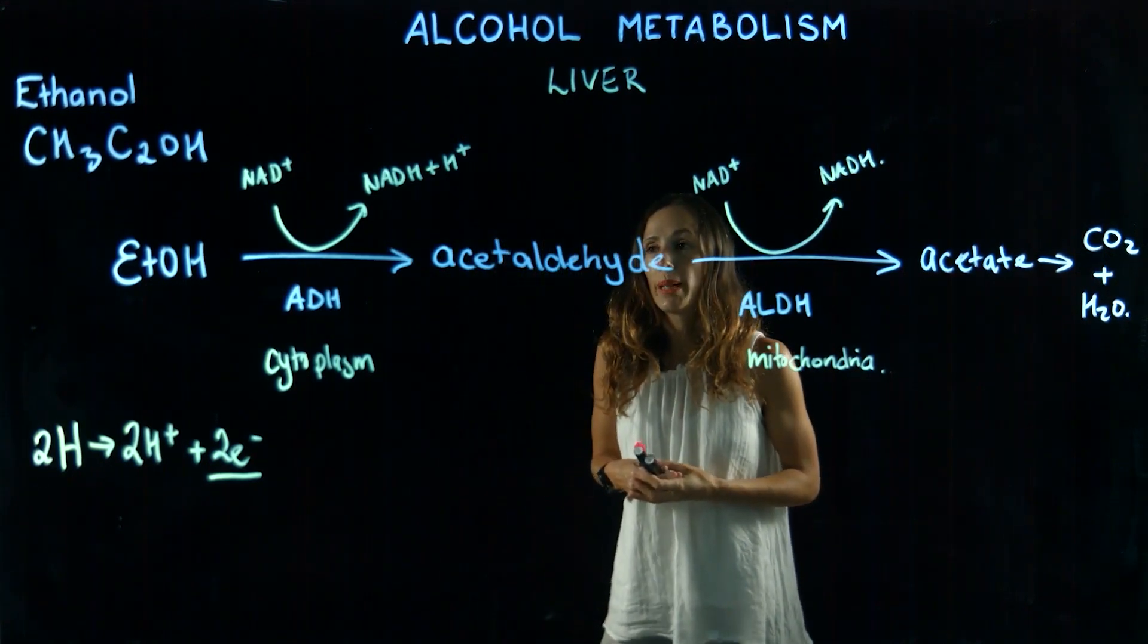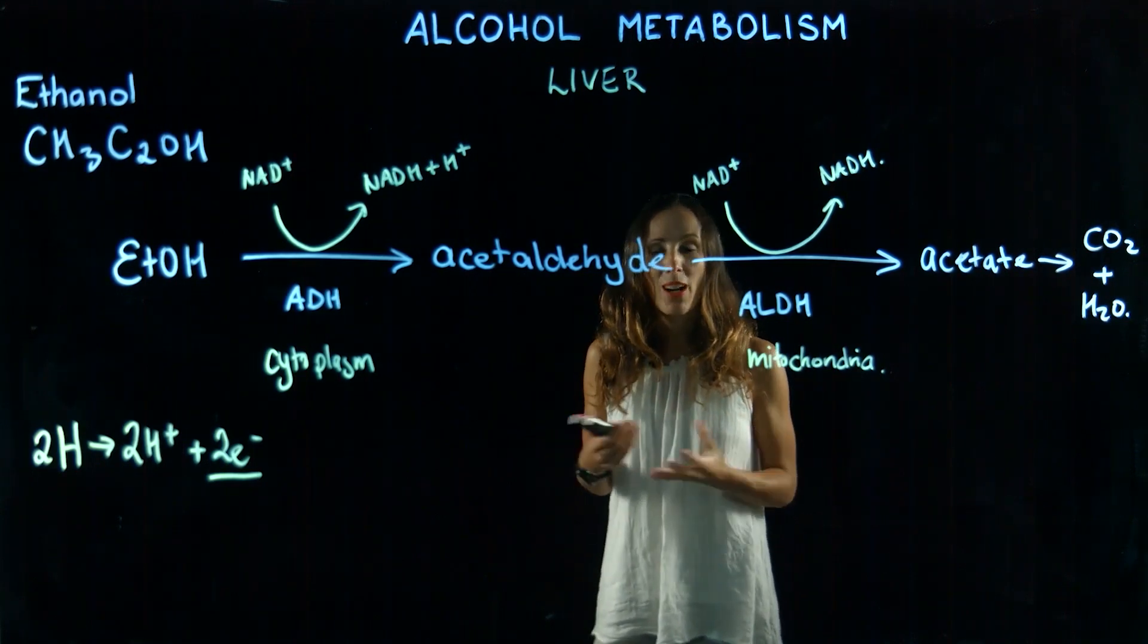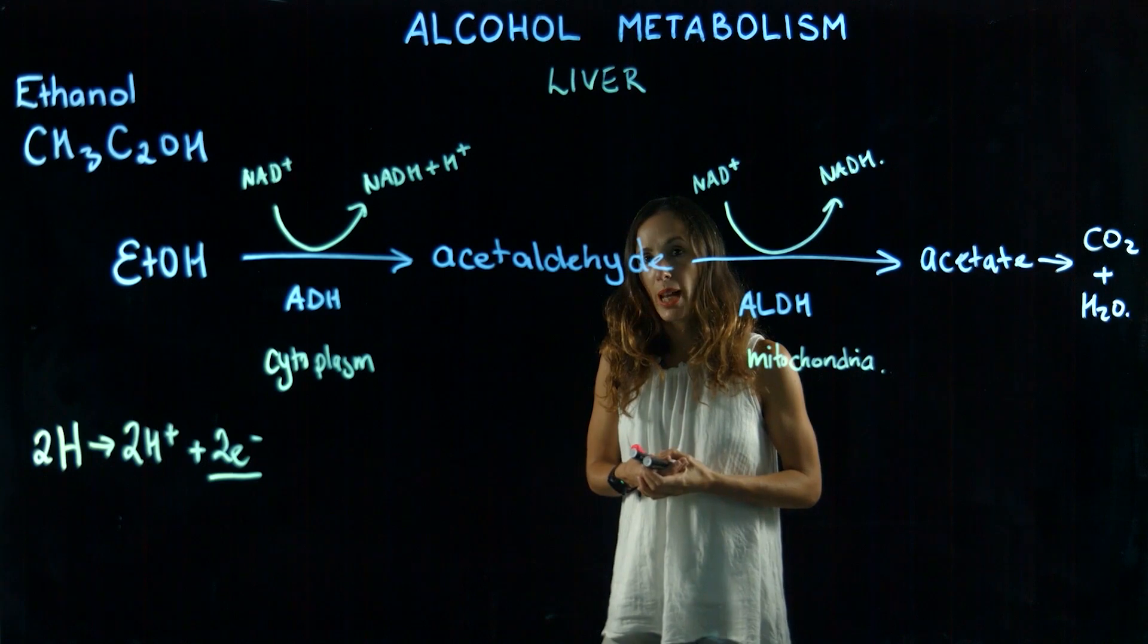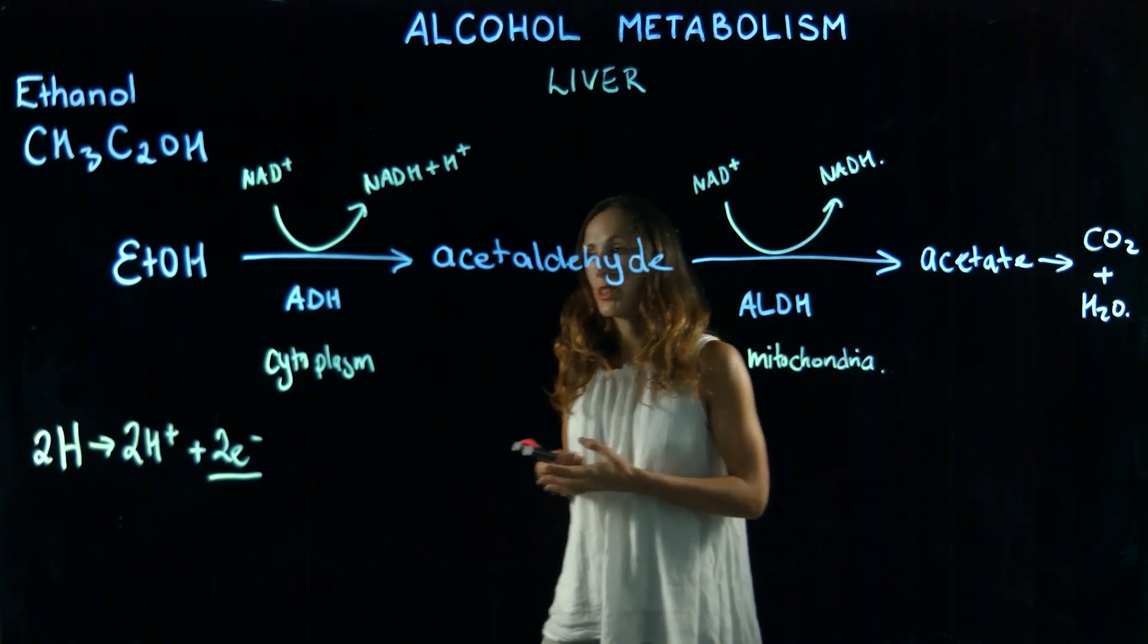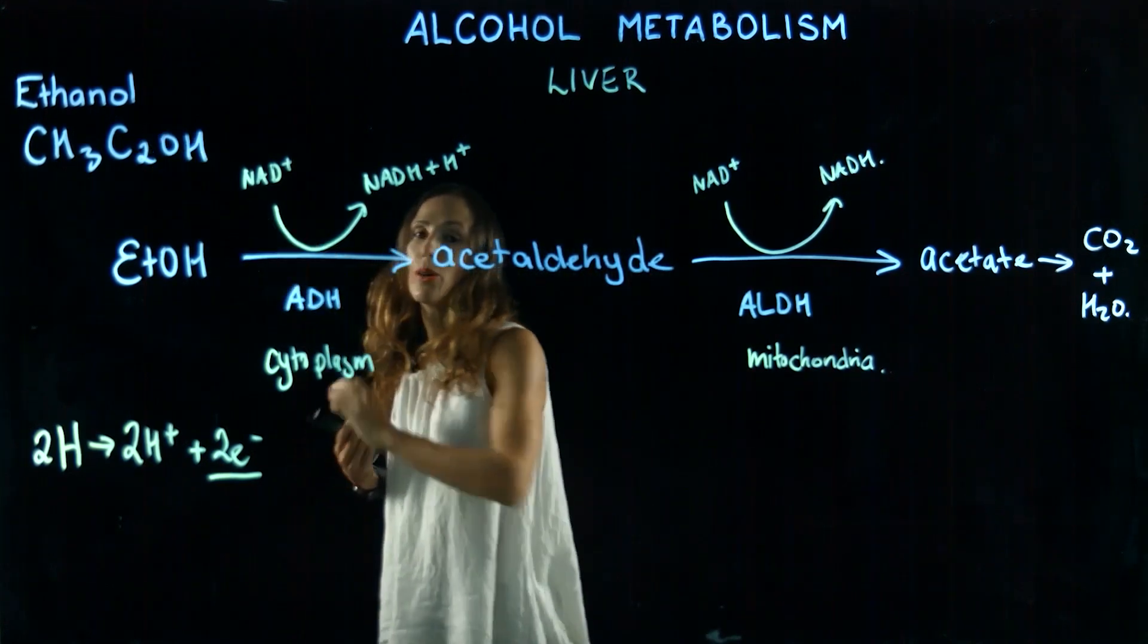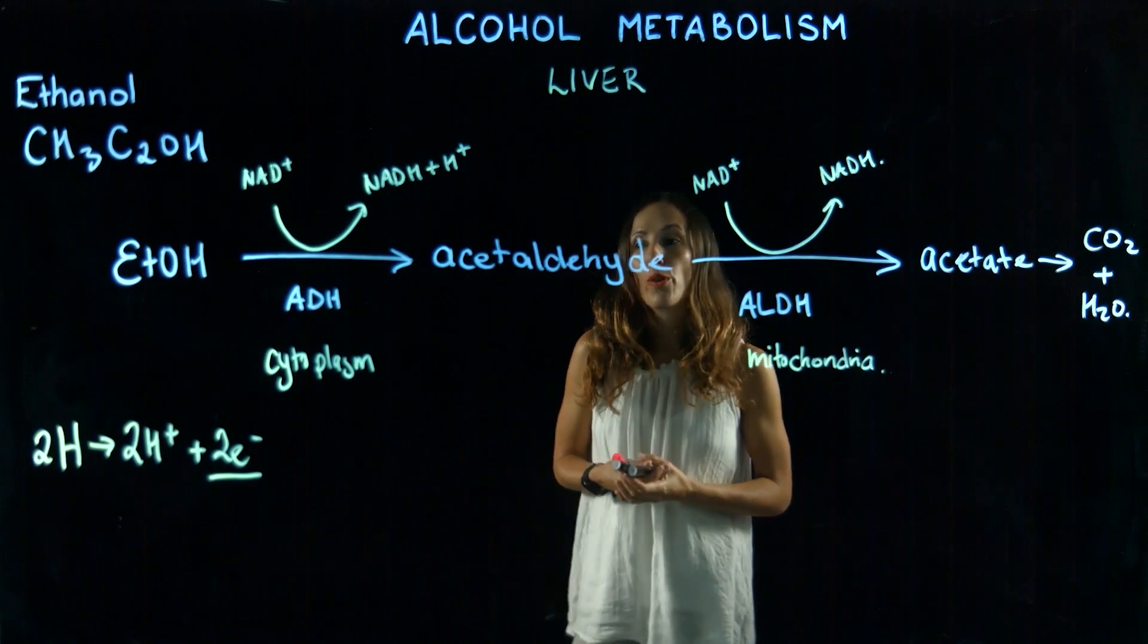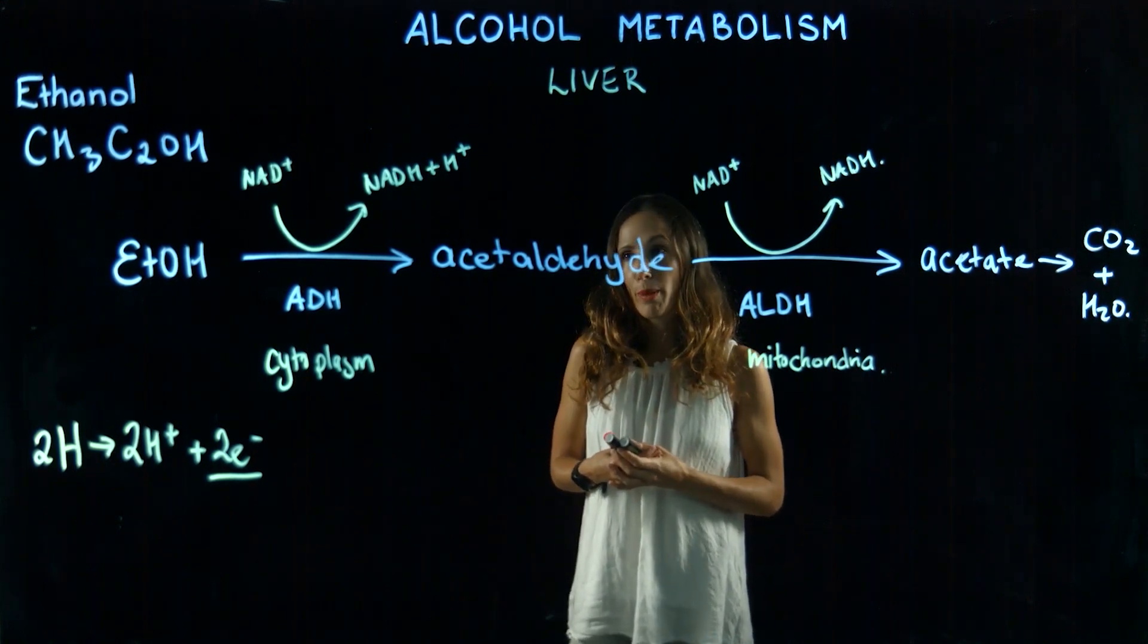This NADH gives off its electrons or is re-oxidized in the electron transport chain. We're generating energy, a transfer of energy in this reaction. Ethanol is actually thought of as a fourth macronutrient because we can obtain energy from this molecule.